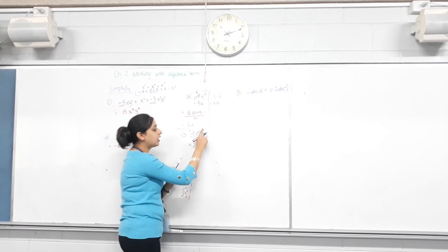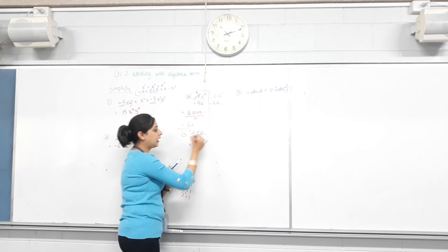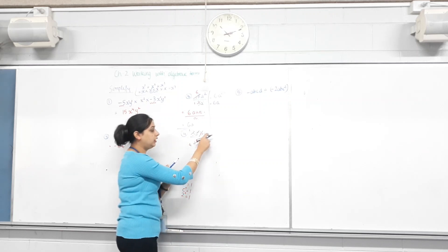Then, you want to cancel B's. How many are on top? One. How many at the bottom? One. So, do they cancel? Yes. C. There's none at the bottom. So, how many? Just one.